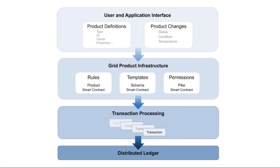Permissions: Grid Product integrates seamlessly with the Grid permissions capability. This capability allows an administrator to grant certain agents the permission to write data to the distributed ledger. This ensures that only agents with the proper roles have the ability to create, update, or delete product records on Grid Product.